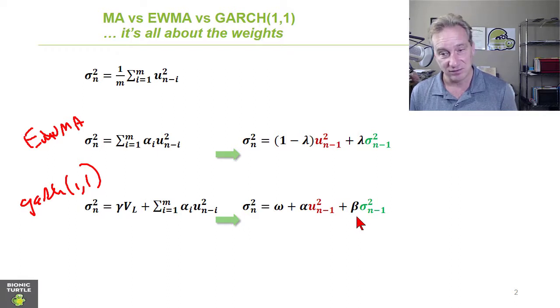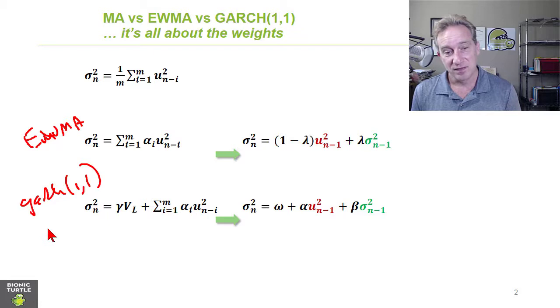Lambda is analogous to beta. One minus lambda is analogous to alpha. But with the GARCH 1.1, the difference is we have a third term here.